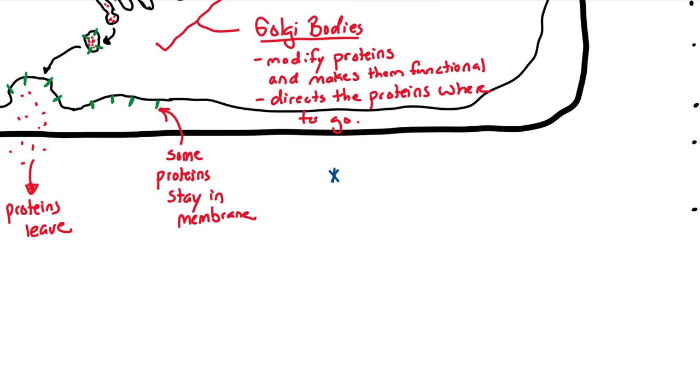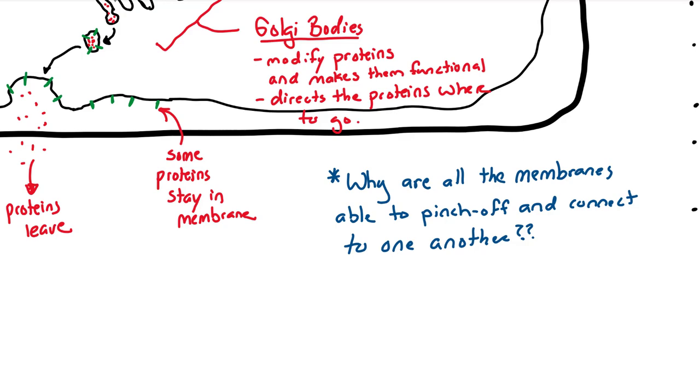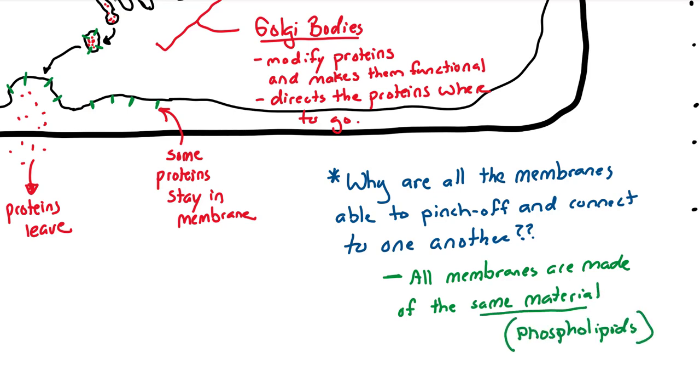Why are all these membranes, though, able to pinch off and attach and pinch off again and attach? The ER membrane pinches off and becomes part of the Golgi membrane. The Golgi membrane becomes part of the cell membrane. It's all because the membranes, all membranes, are made of the same material, phospholipids. Those little jellyfish-looking things.